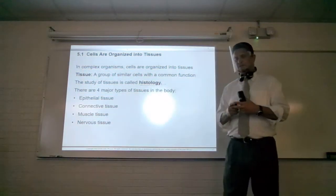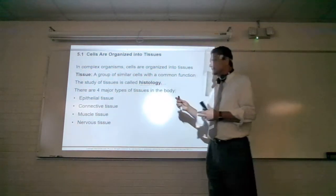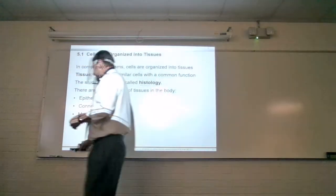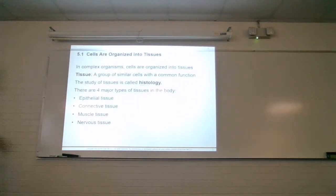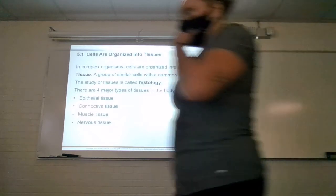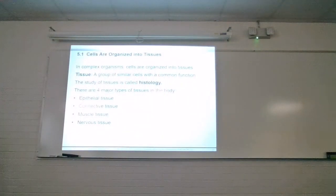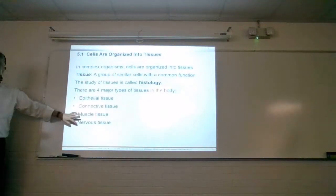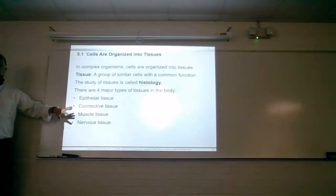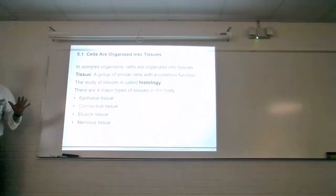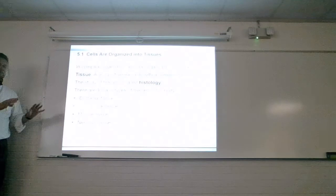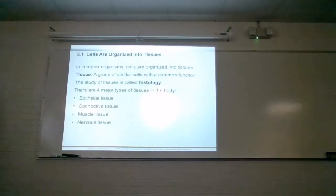When we start looking at tissues, there are four types: epithelial tissue, connective tissue, muscle tissue, and nervous tissue. Muscle and nervous tissue we're going to barely touch on here because they have their own chapters. We'll really dig into them later. For now, we'll just cover the basics.